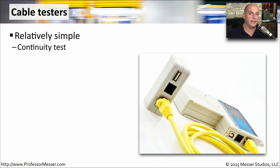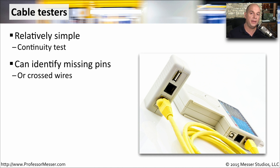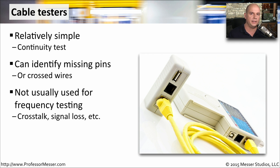A simple and relatively inexpensive tool to have in your tool bag is a cable tester. This is something that's going to provide you with a continuity check from one end of the cable to the other. It can identify when there might be pins missing between both sides of the cable, or times that you've accidentally crossed the wires when you're crimping down those connectors. You don't generally use cable testers for more advanced functions like identifying the amount of crosstalk on a cable or the amount of signal loss from one end to the other. For those, you'll need a more advanced and more expensive cable analyzer.